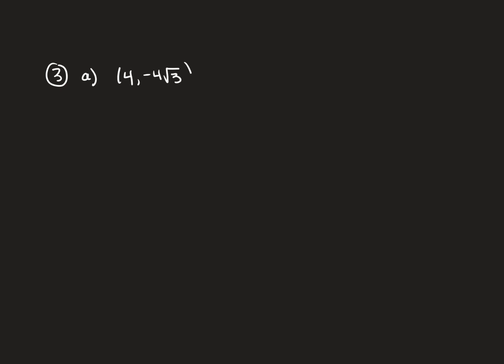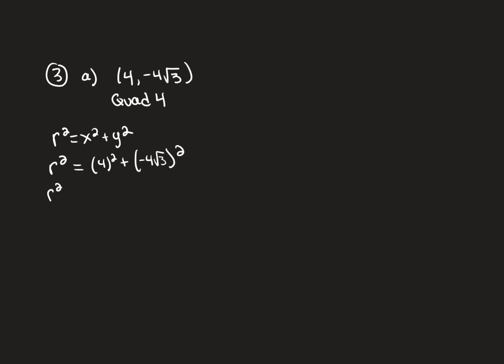The next problem goes the other way — they give the xy ordered pair and want the trigonometric polar version. I have (4, −4√3). When going from xy to polar, always name the quadrant first so you don't make an error. Here we're in quadrant 4. Using r² = x² + y², I get r² = 4² + (−4√3)² = 16 + 48 = 64, so r = 8.